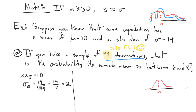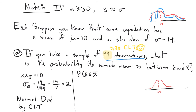Now that we know that, what do we want to find? It's going to be a normal distribution by the central limit theorem — we have a big sample size. We're looking for the probability that the mean of any sample we pick is going to be between 6 and 8. We're going to have to convert to the standard normal distribution and then use our tables.